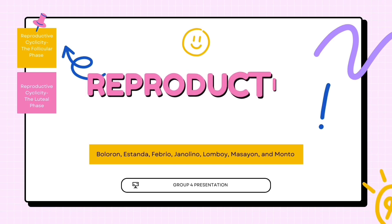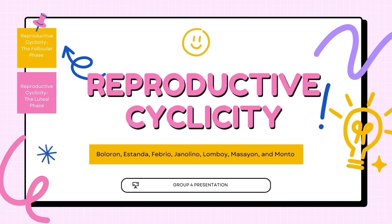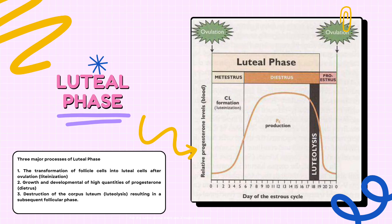Hello everyone. Today's video is all about reproductive cyclicity. For the luteal phase, there are three major processes.